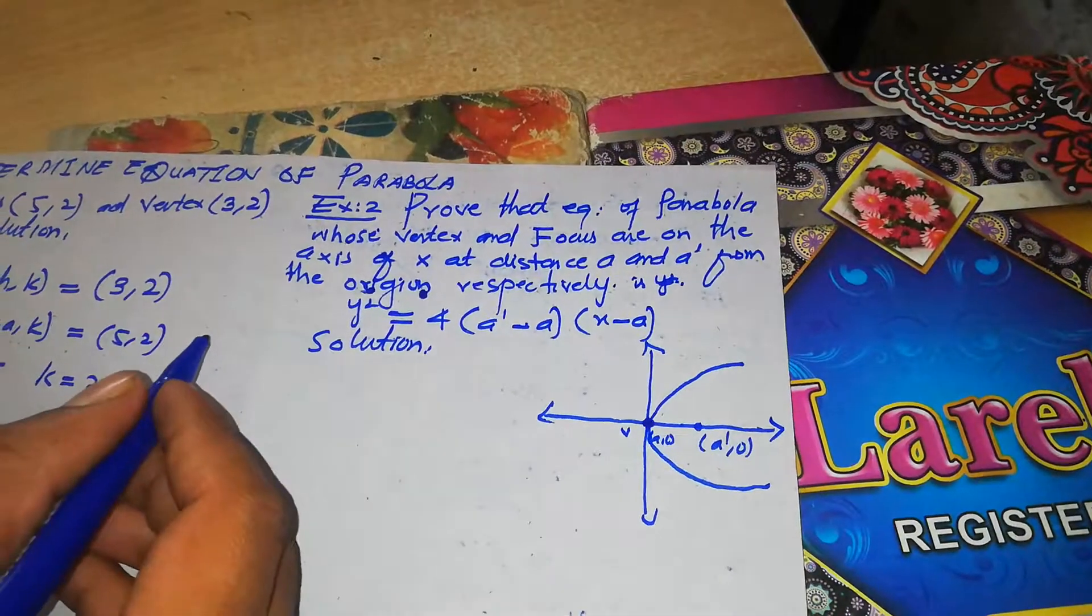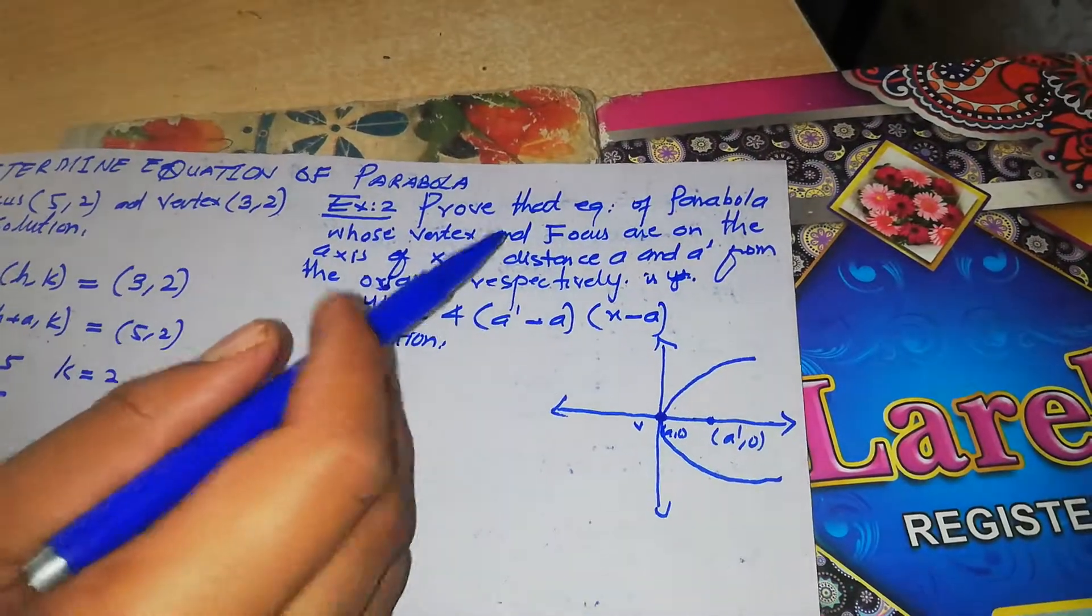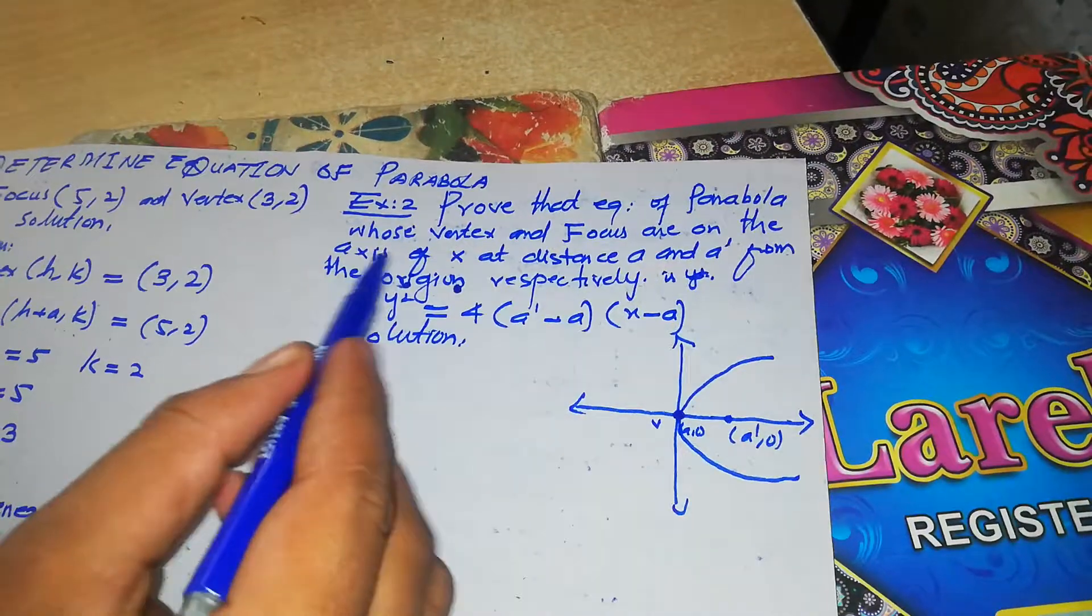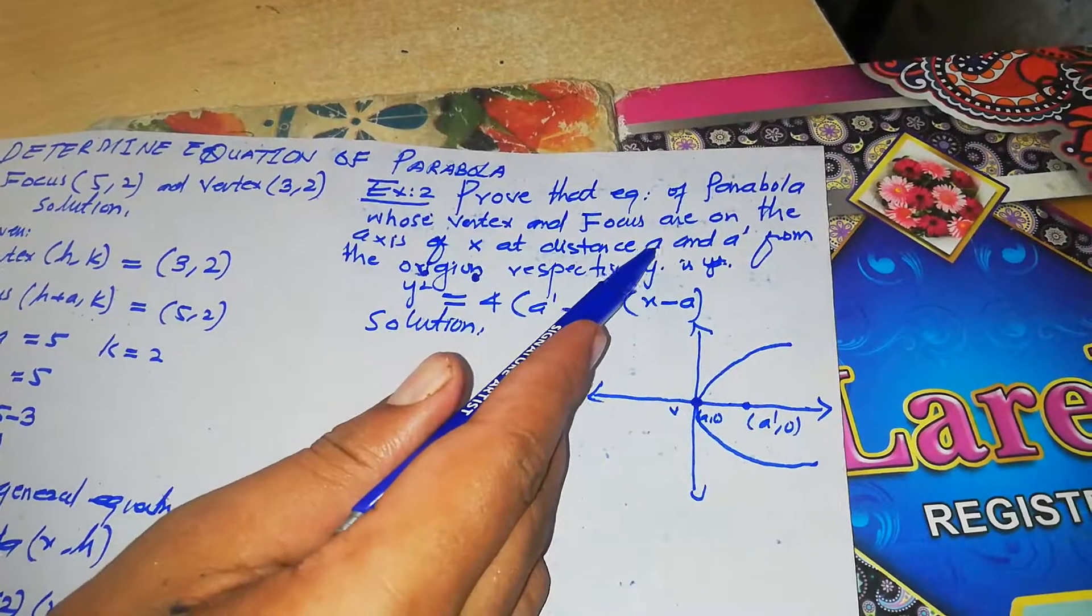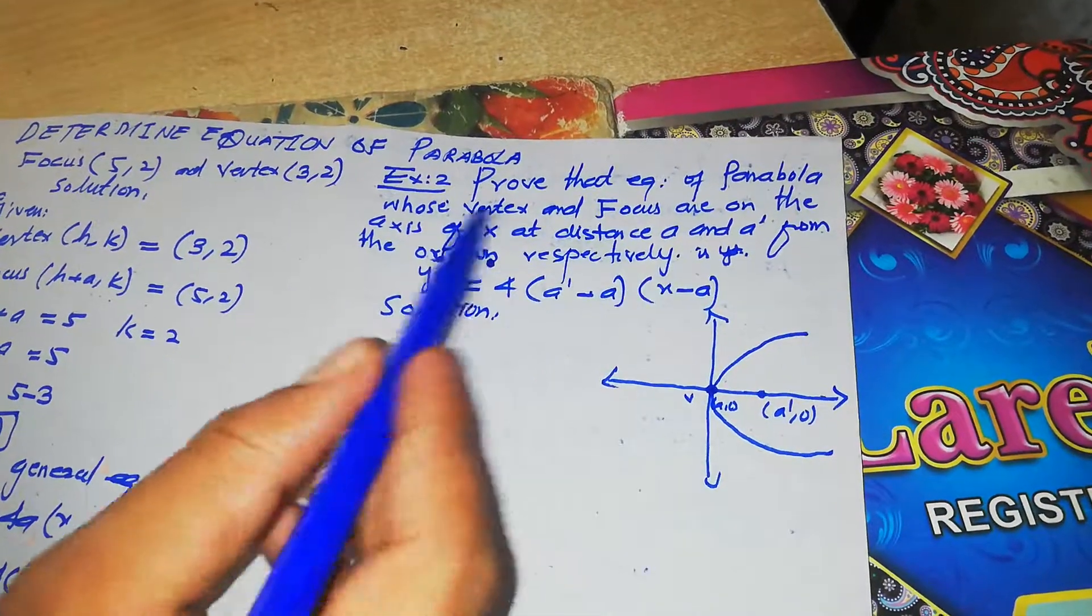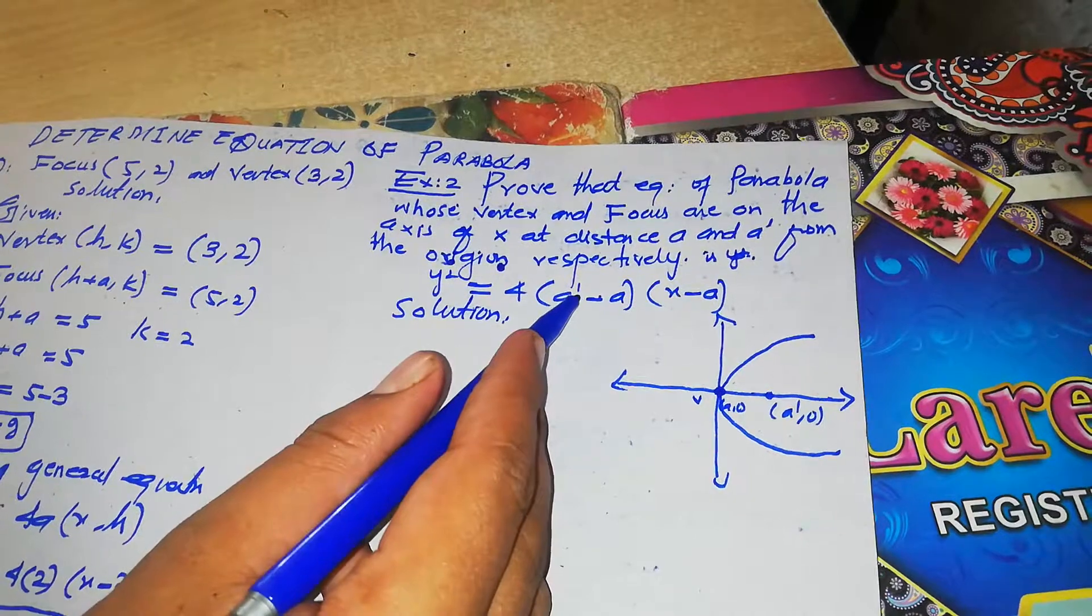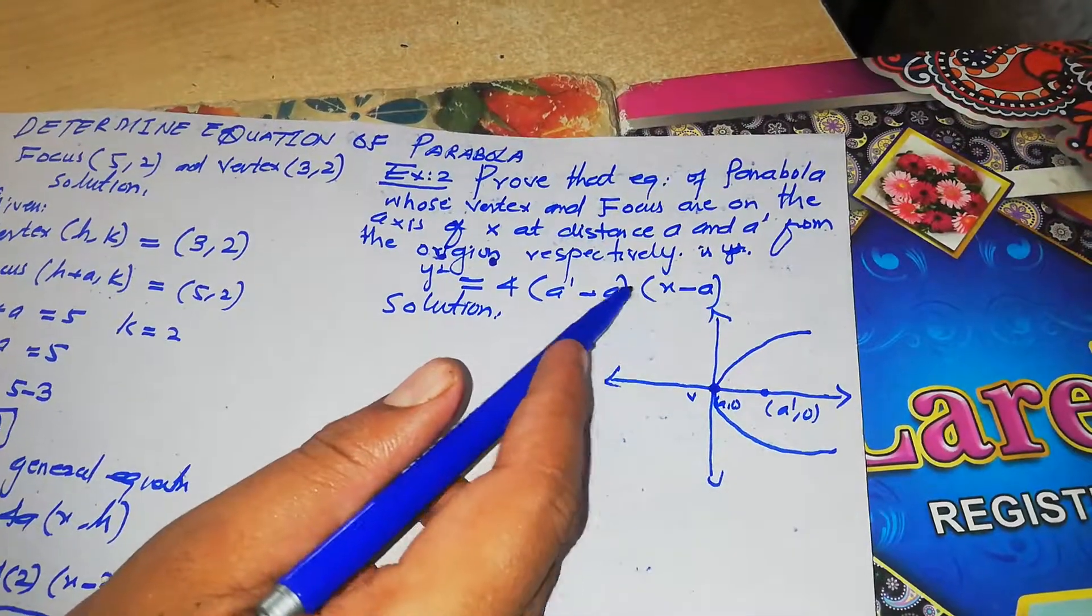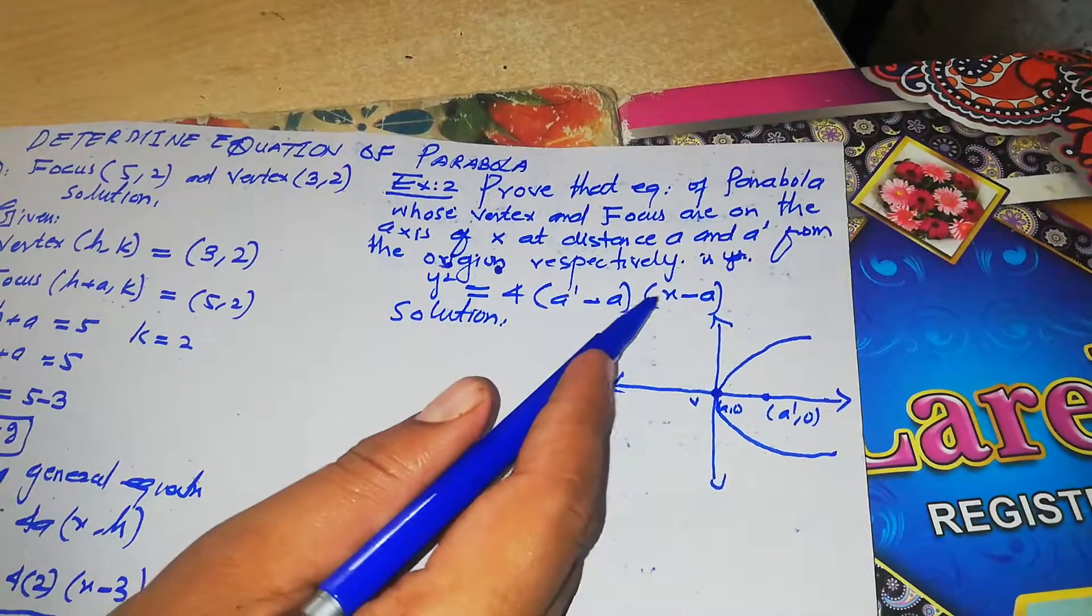Now we will solve problem number two: prove that the equation of a parabola whose vertex and focus are on the x-axis at a distance a and a prime from the origin respectively is y squared equals 4(a prime minus a)(x minus a). Now how we will prove that this is the equation of the parabola.